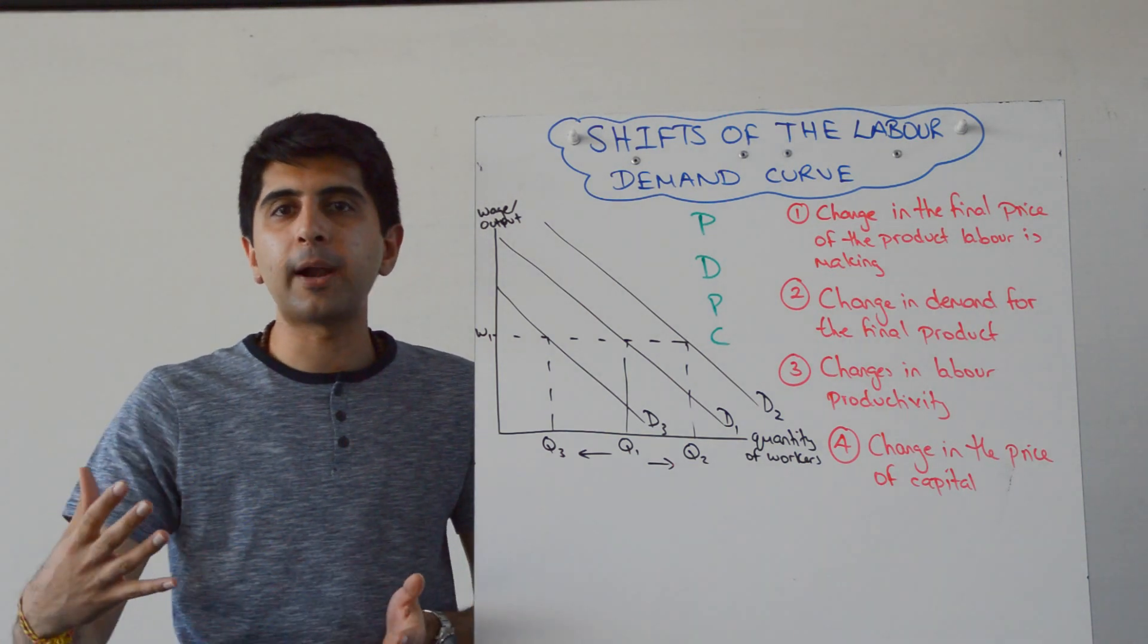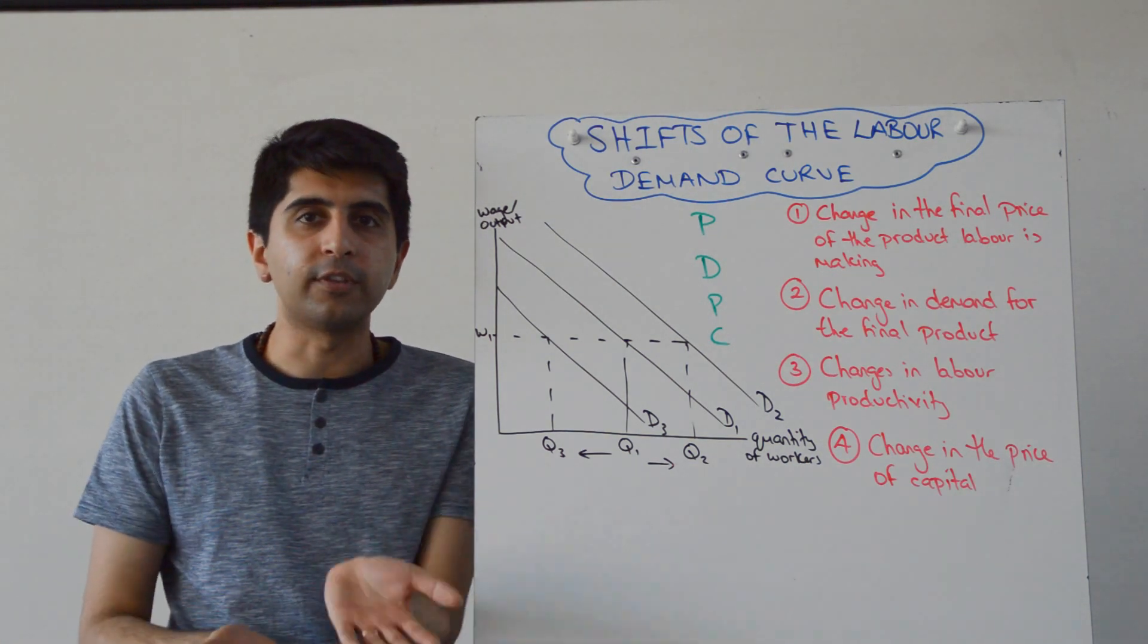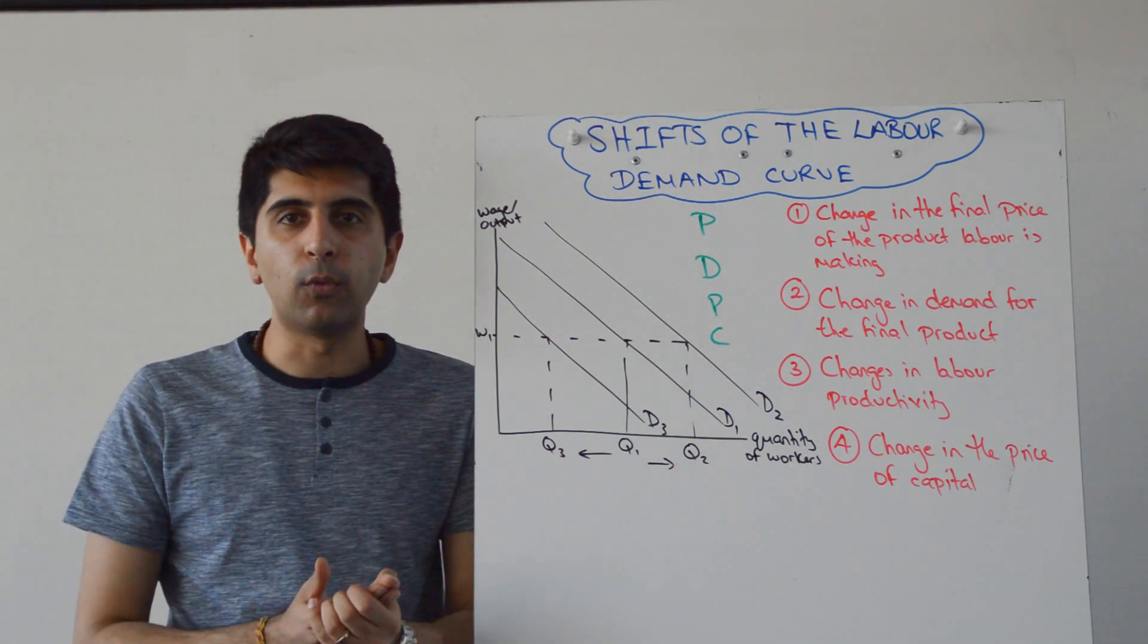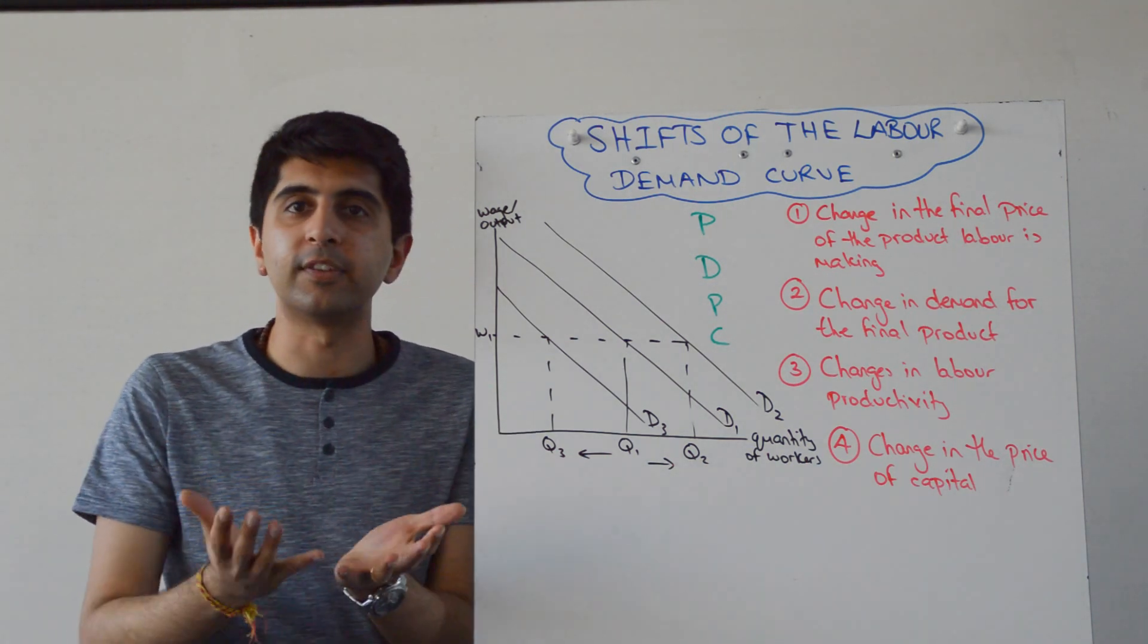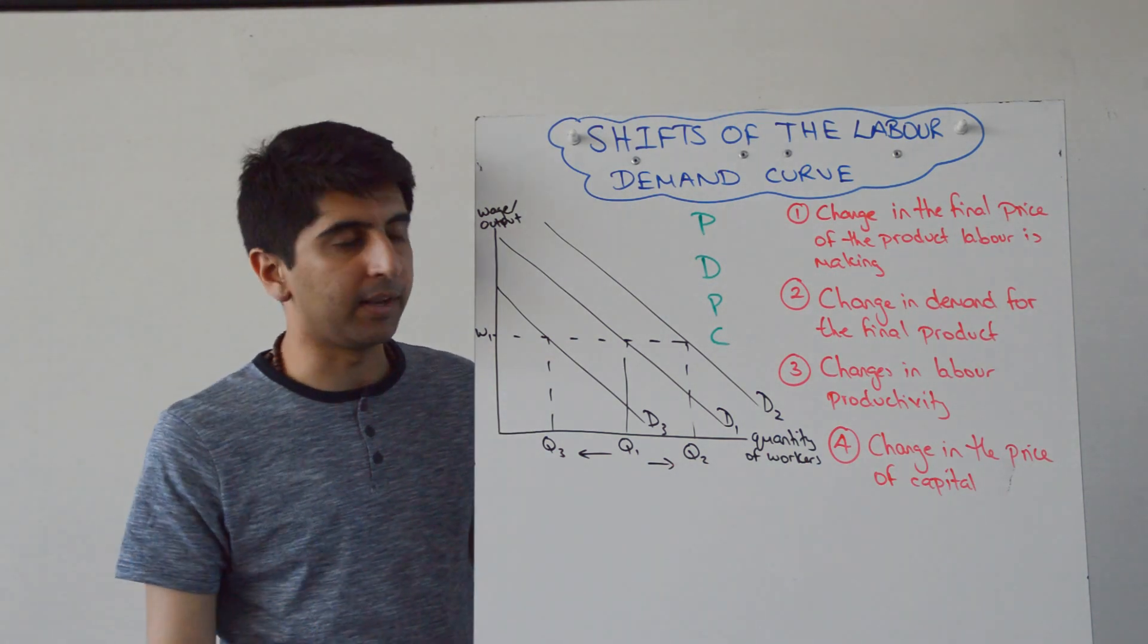So let's take an increase. Ceteris paribus, the price of that product goes up, then MRP of that worker is going to increase, the demand curve will shift to the right. Of course there are lots of assumptions there, but that's just one simple example.